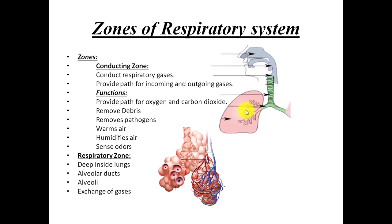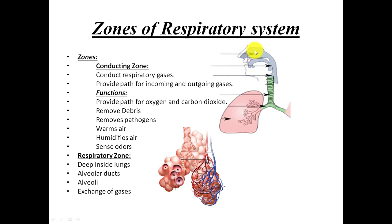The conducting zone also removes debris. In the nasal cavity there are hairs, and in the larynx and pharynx there are mucous membranes. In the trachea there are ciliated epithelial cells, and those cilia by their movement remove debris and pathogens from the respiratory system. The conducting zone also warms the air — cold inhaled air is warmed in the nasal cavity to protect deeper tissues.